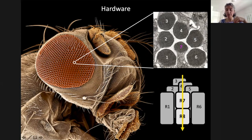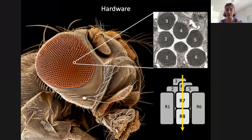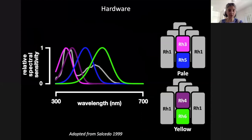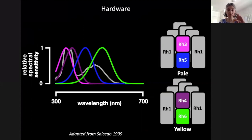R1 to R6 are involved in achromatic vision and all express the same opsin. R7 and R8 express different types of opsins and are the cone-like photoreceptors of flies. There are actually two types of ommatidia depending on the opsins expressed in R7 and R8. R7s express one of two UV opsins, RH3 or RH4, and R8 expresses either the blue RH5 or the green RH6 — they always come in these two pairs, distributed stochastically in the eye. I'll have little cheat sheets on the corners of my slides whenever necessary for comprehension.